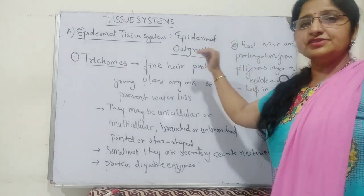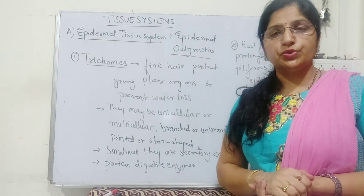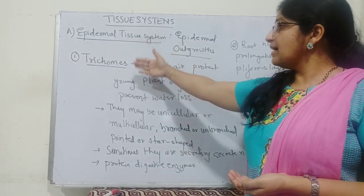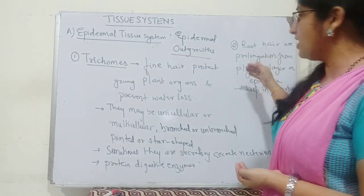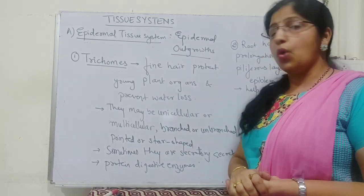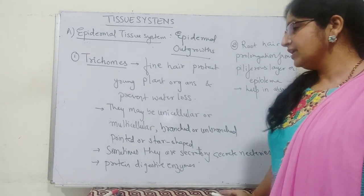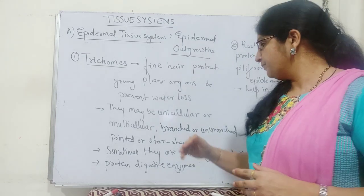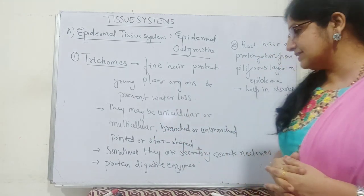There are two major types of epidermal outgrowths: trichomes from the stem body and root hairs from the root body. Trichomes are fine hairs that protect young plant organs and help in prevention of excess water loss. They can be unicellular or mostly multicellular, and may be branched or unbranched, pointed or star-shaped.